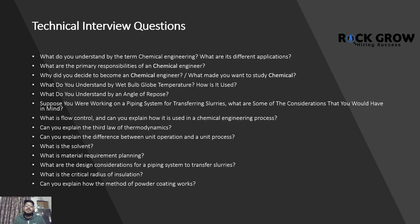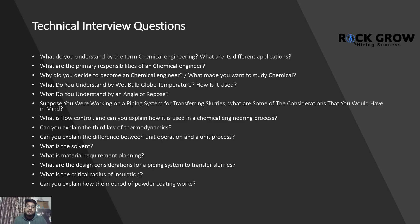Talking about the technical interview questions that will be there in your next interview: What do you understand by the term chemical engineering? What are its different applications? What are the primary responsibilities of a chemical engineer? Why did you decide to become a chemical engineer? What do you understand by wet bulb globe temperature and how is it used? What do you understand by angle of repose? Suppose you were working on a piping system for transferring slurries — what are some considerations you would have in mind? What is flow control and how is it used as a chemical engineering process? Can you explain the third law of thermodynamics? Can you explain the difference between unit operation and a unit process? What is a solvent? What is material requirement planning? What are the design considerations for a piping system to transfer slurries? What is the critical radius of insulation? Can you explain how the method of powder coating works?